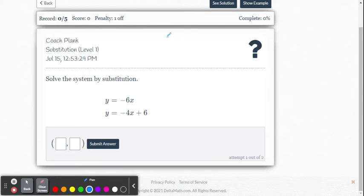This video provides an example for how to solve a system of linear equations using the substitution method. This is level one difficulty within the Delta Math online system.